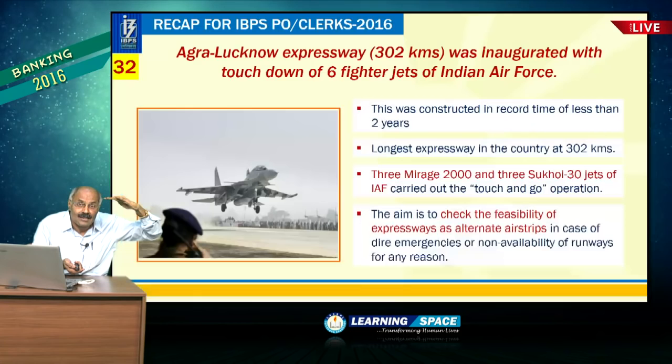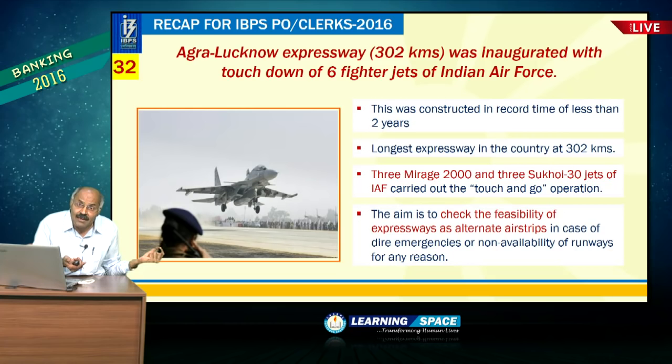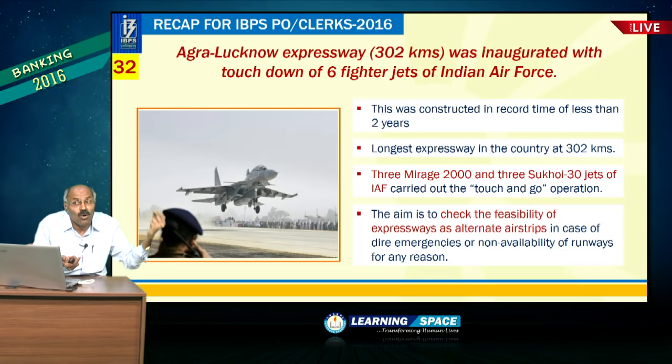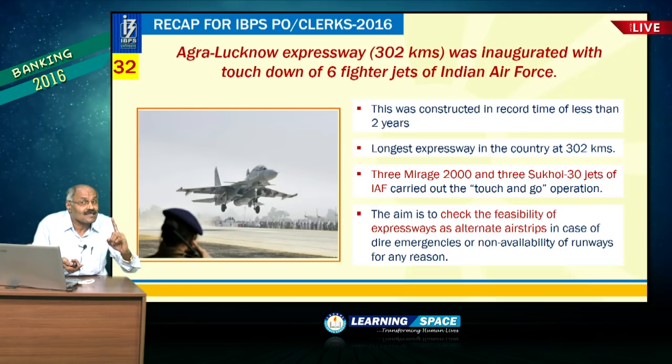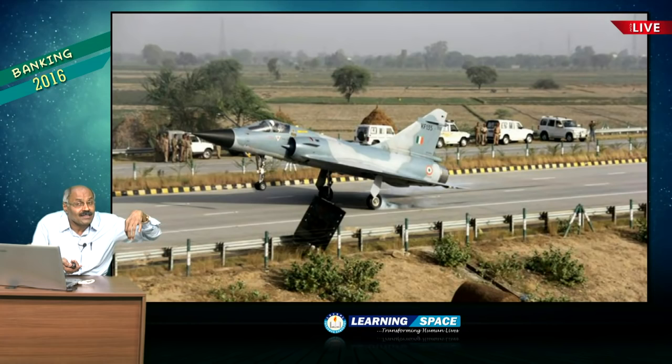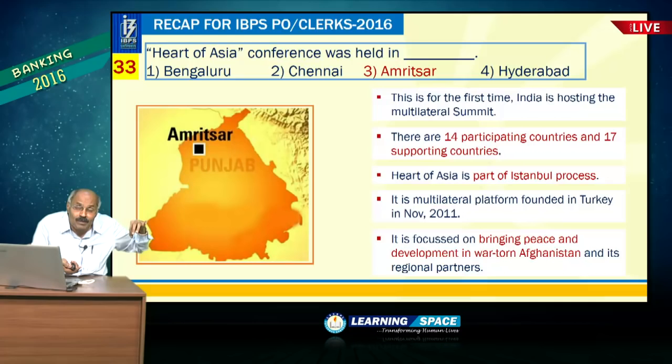On the Agra-Lucknow expressway: three Mirage 2000 and three Sukhoi-30 jets of the Indian Air Force landed on it. This was to check the feasibility of expressways for use in emergencies. Mirage is France-made and Sukhoi is Russian-made. They landed on the nation's longest expressway.